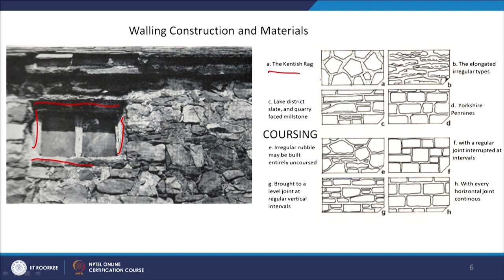The first arrangement we refer to is the regular arrangement of stones, which we call Kentish rag. The second type has elongated irregular types coming from sandstone in a kind of regular format, slightly elongated in shape. I was in the Lake District in England, which is famous for its slate and stone buildings — quarry-faced millstone constructions are famous there because slate is abundantly available. Similarly in Yorkshire, the style is referred to as Yorkshire Pennines style, as the style is denoted by its region, giving a unique character to that town, village, or settlement.